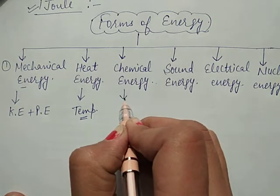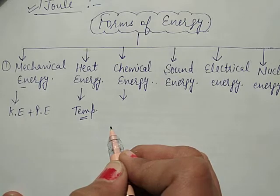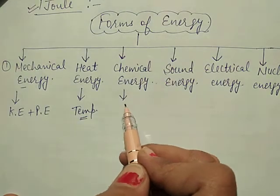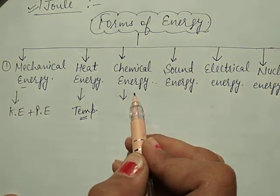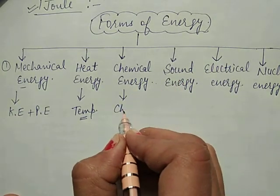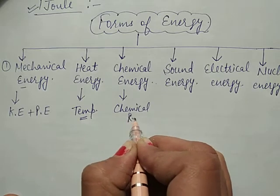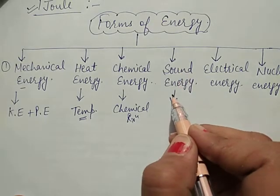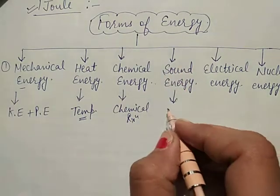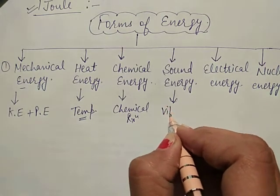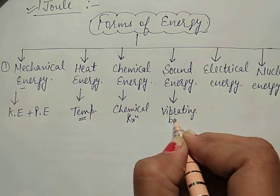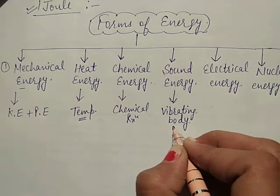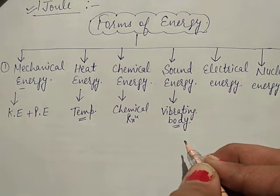Point number three is chemical energy — the energy released during chemical reactions is called chemical energy. Next is sound energy. The energy of a vibrating body that produces sound is called sound energy. Sound is produced by vibrating bodies, and the energy released during the vibration of a body is called sound energy.